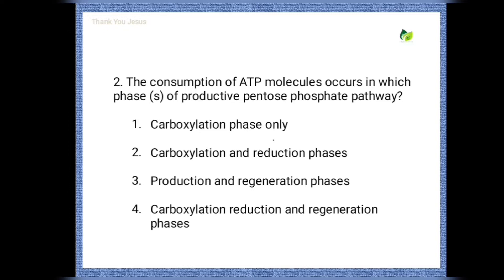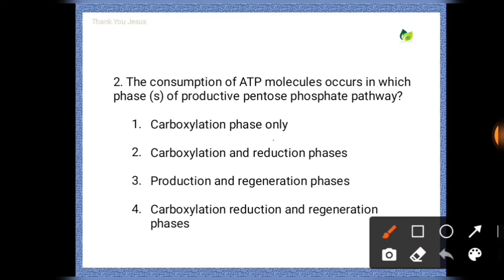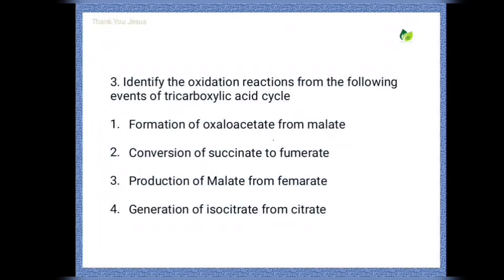Next question: The consumption of ATP molecules occurs in which phases of the reductive pentose phosphate pathway? Options are: carboxylation phase only; carboxylation and reduction phases; reduction and regeneration phases; carboxylation, reduction and regeneration phases. The correct option is the third one — reduction and regeneration phases.